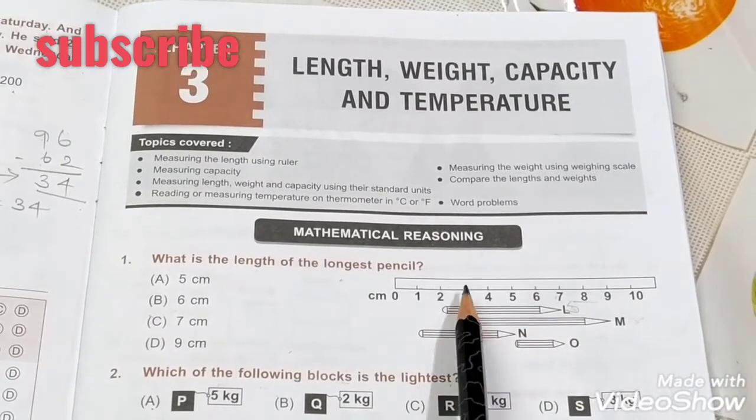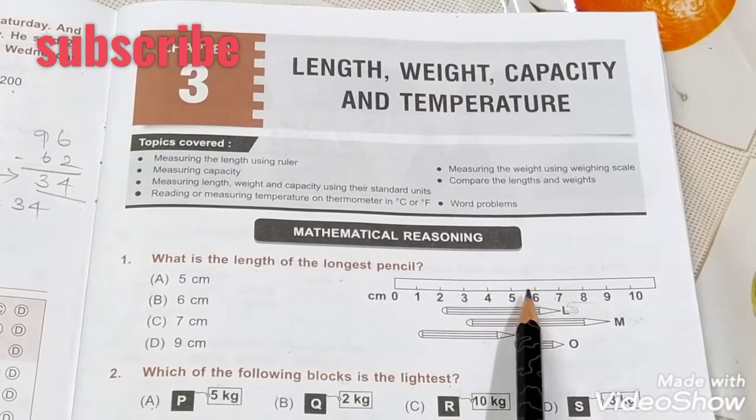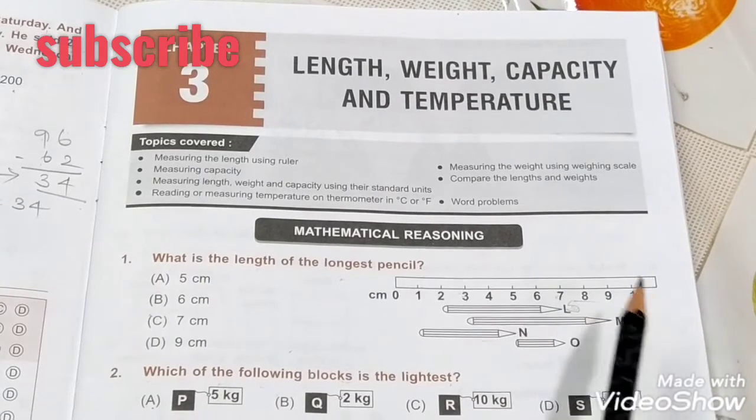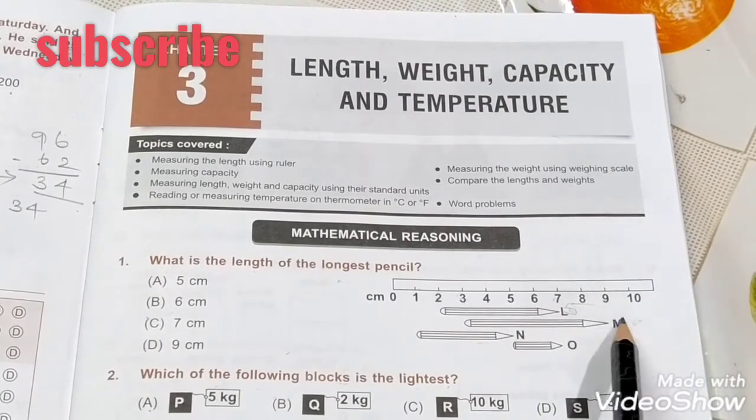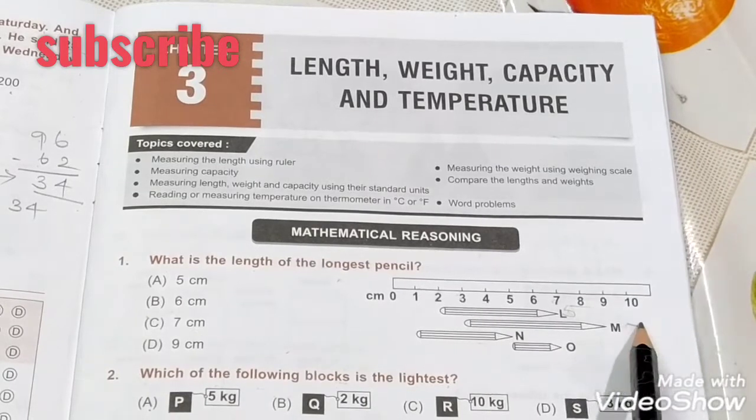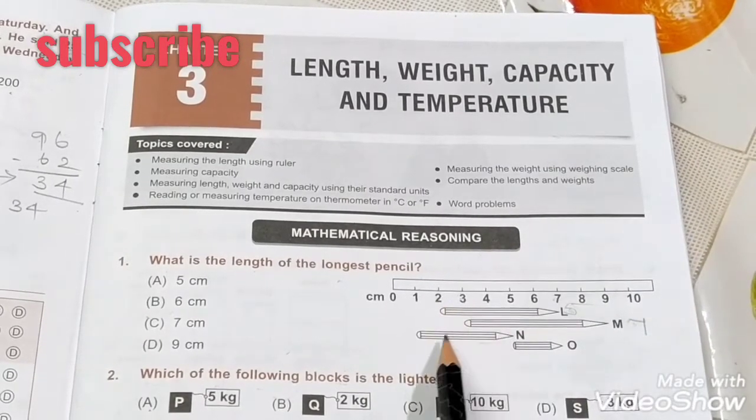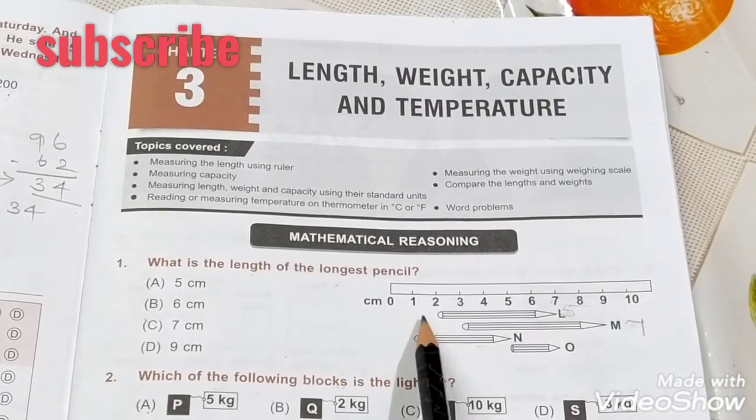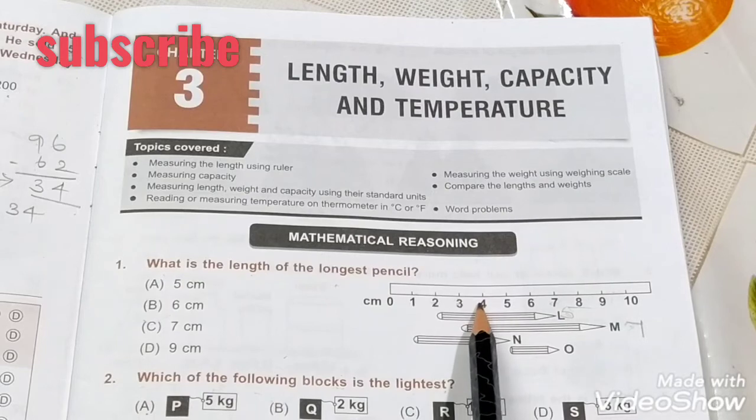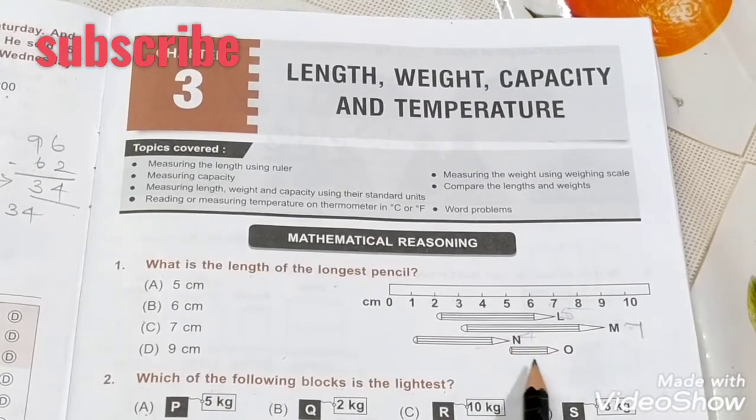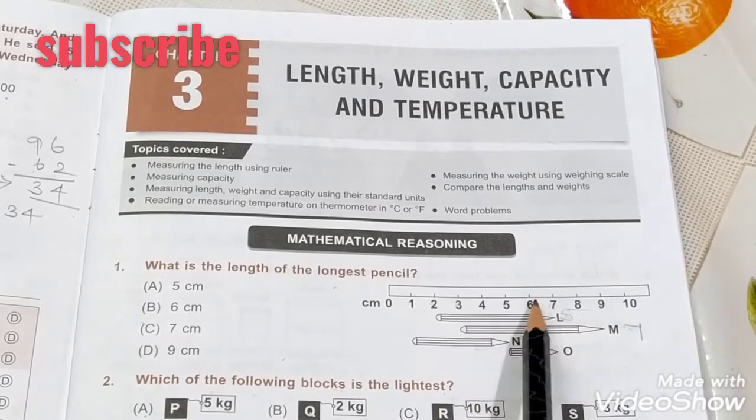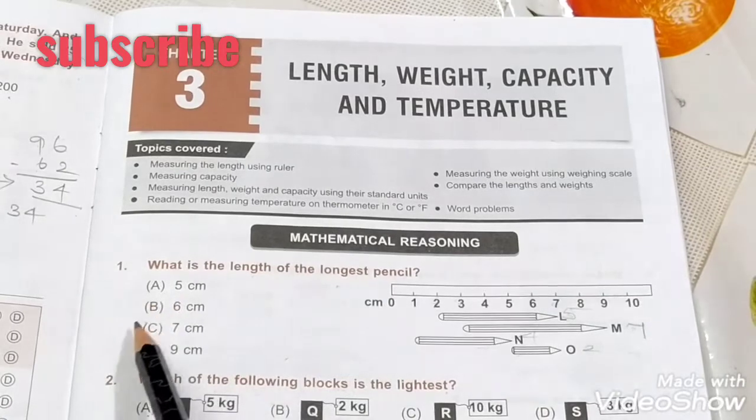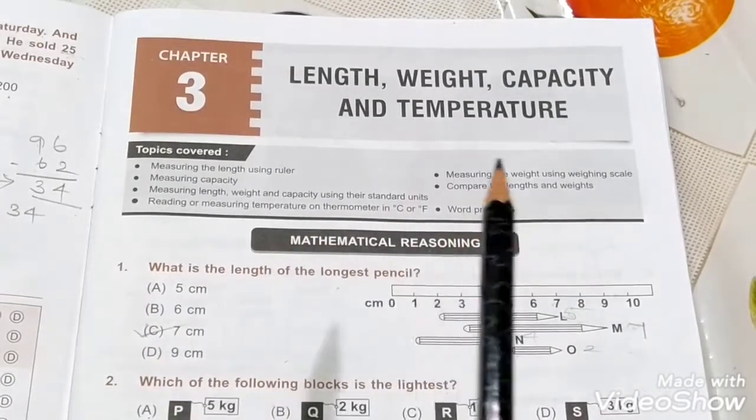So five centimeters for M pencil. Zero, one, two, three, four, five, six - so seven. They will become here seven. Next one is this one: zero, one, two, three, four. O pencil: one, two. So which one is the largest pencil? M pencil. So nine? No, seven is the correct answer. Seven centimeters is the correct answer.